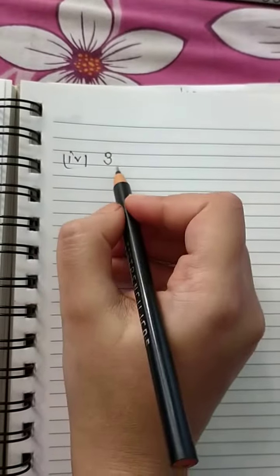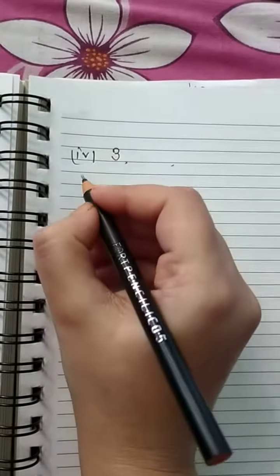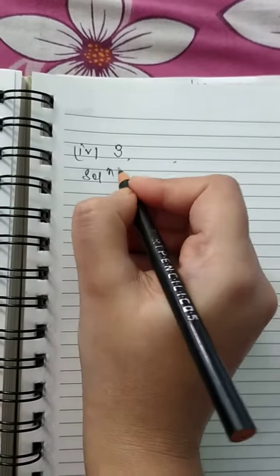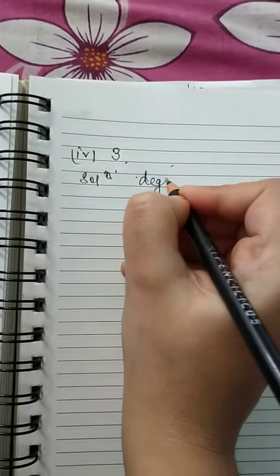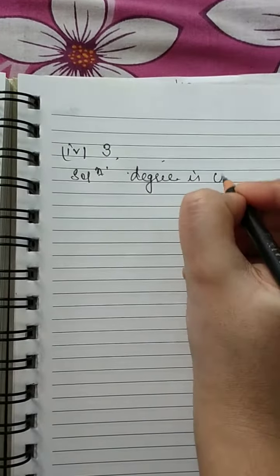Here there is nothing in these polynomials, no variables, so what will the answer be? Degree is 0.